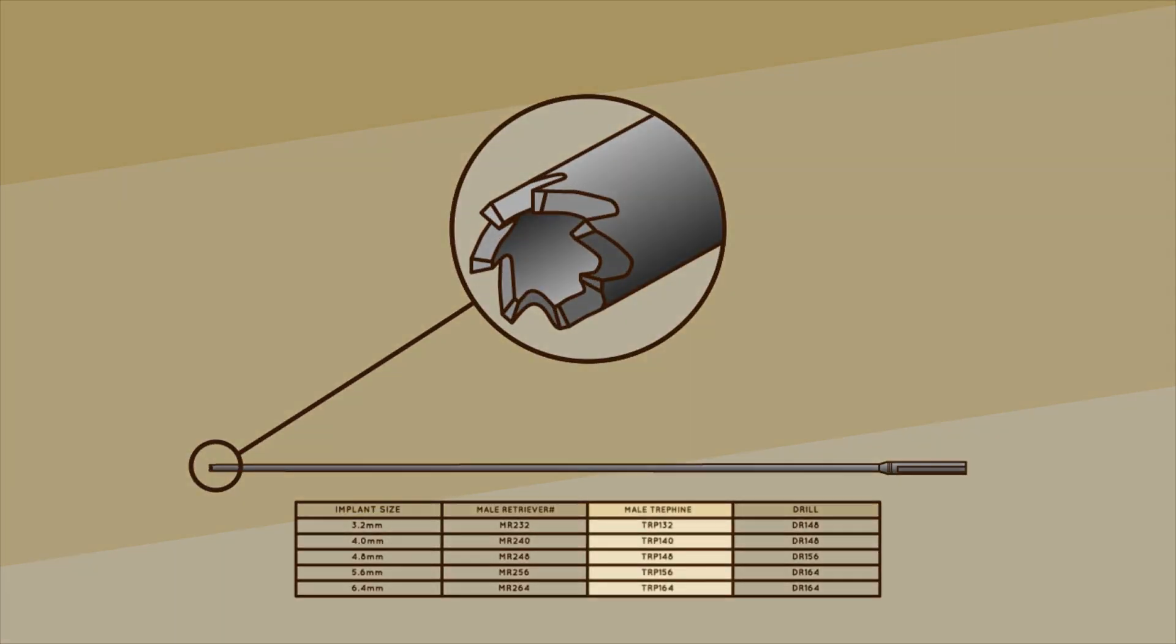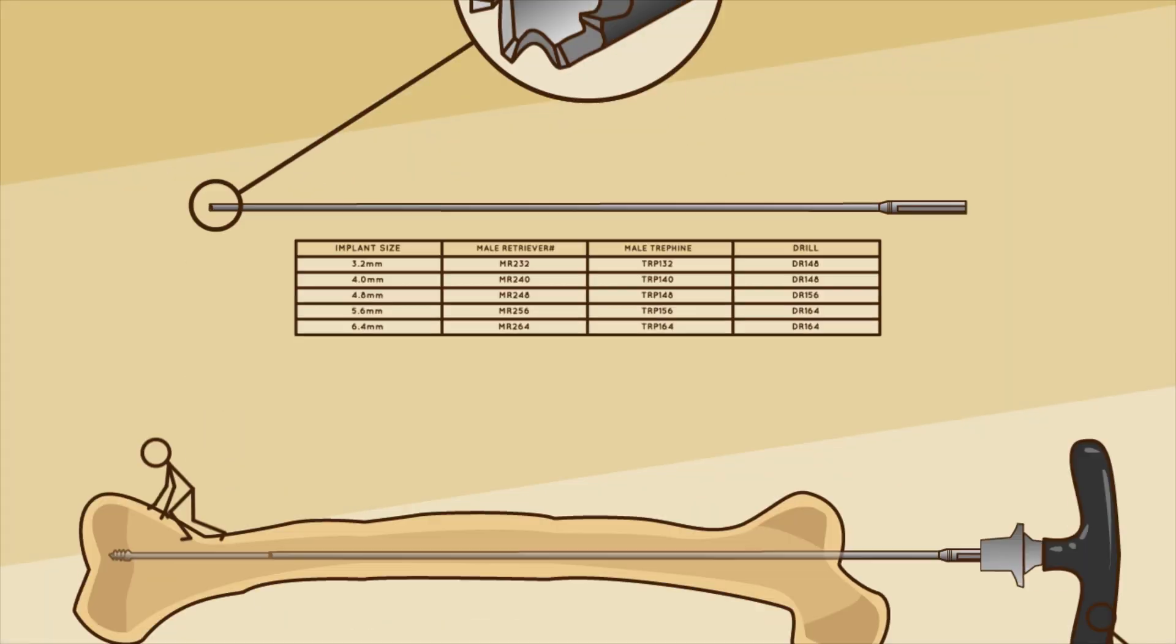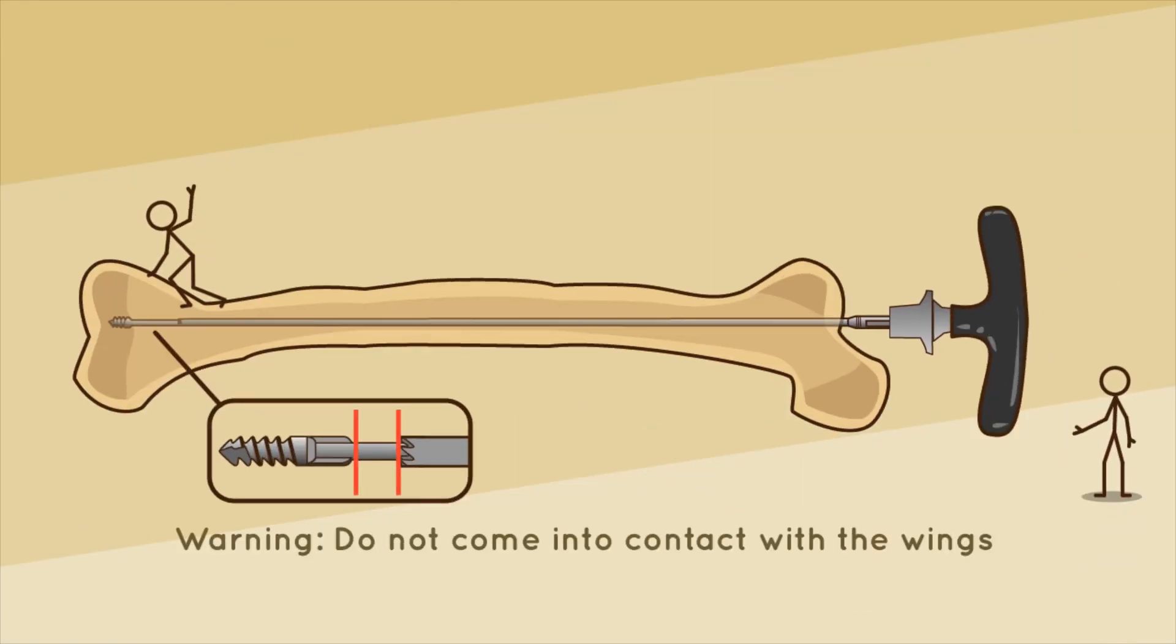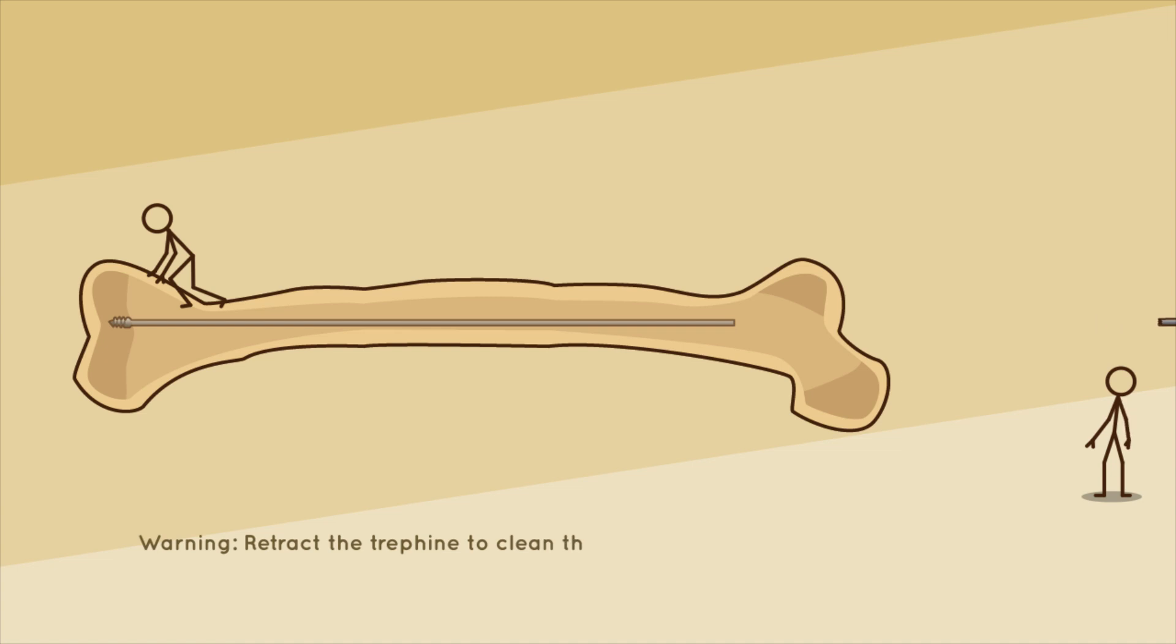A trefine of the diameter corresponding to the male components can be used manually or on power to clean a path for the male retriever. Take care not to come in contact with the wings of the male component when advancing the trefine. Warning: Retract the trefine to clean the teeth if advancement becomes difficult.